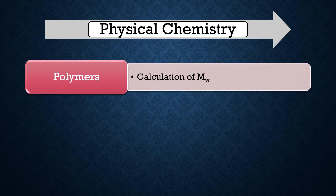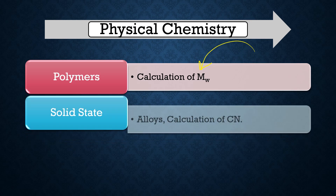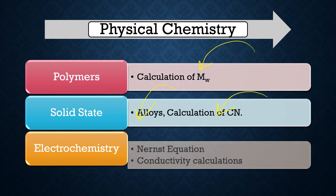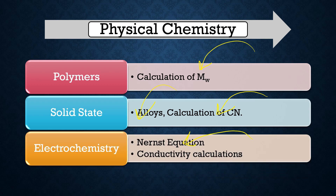In polymers, learn about different methods for the calculation of molecular weight. This portion is very important because polymer is one of the most important compounds in industry. In solid state, learn about the types of voids, calculation of coordination numbers, and examples. You don't have to learn the radius ratio rules, but you must learn coordination numbers — for example, sodium chloride solid has coordination 6:6. In electrochemistry, the Nernst equation is most important, followed by conductivity calculations using the equation R = ρl/A.